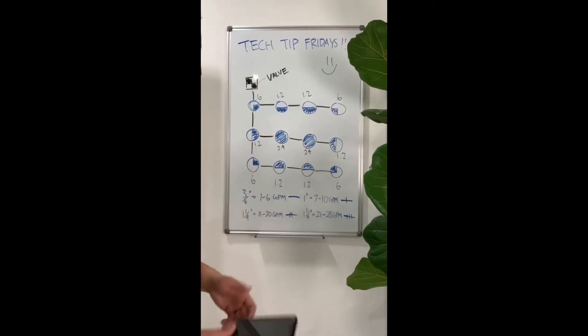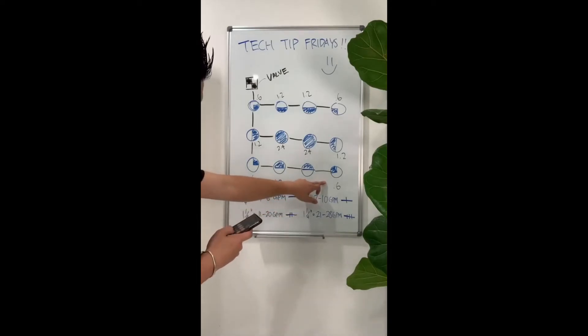So the way that we would do this is we would always want to calculate from the last head. So if your valve's up here, you want to work your way back and start adding your heads to figure out how many GPMs is going through that section. So we'll do 0.6 plus 1.2 plus 1.2 plus 0.6. And that's 3.6 GPMs that's going through this section right here.